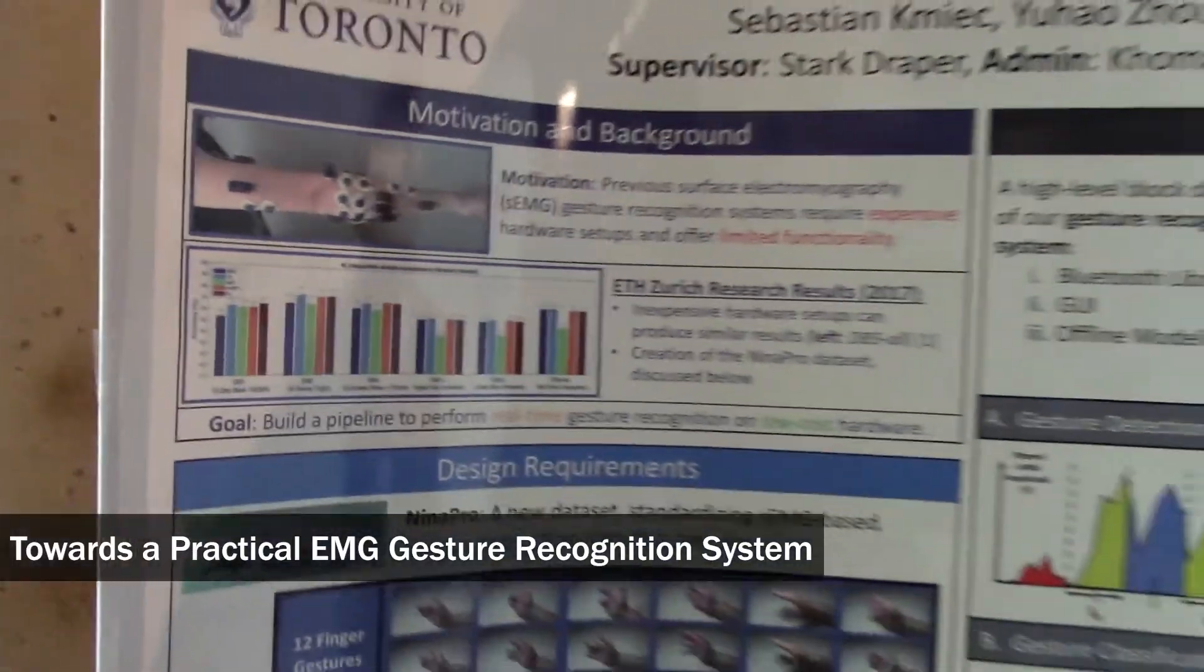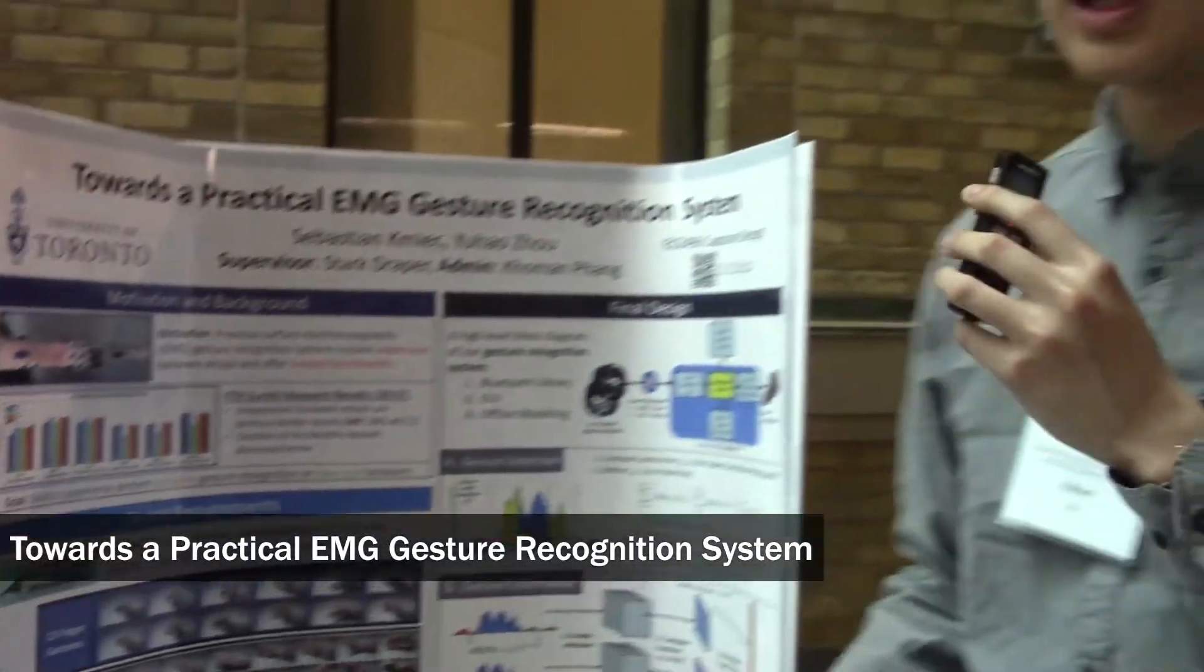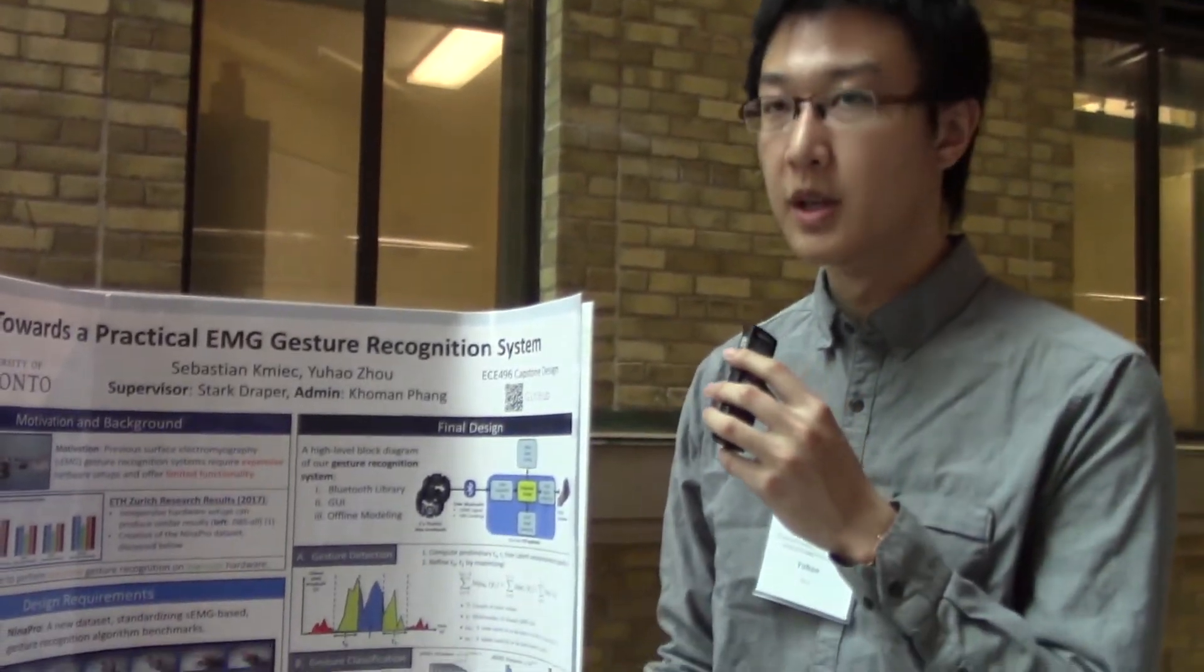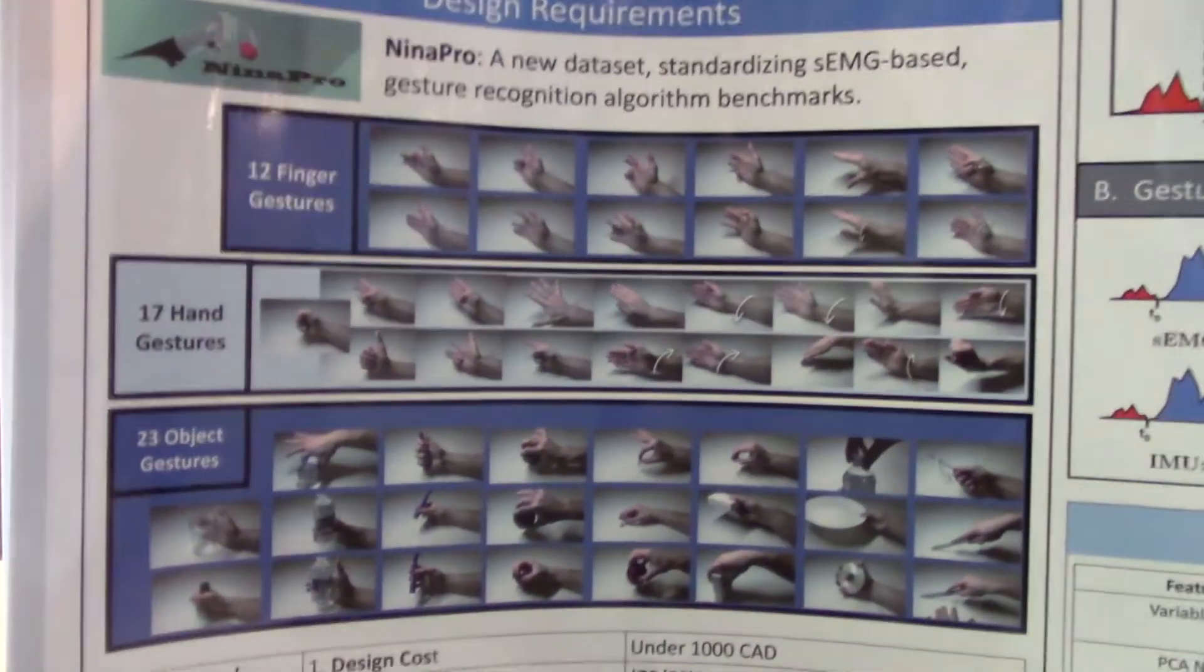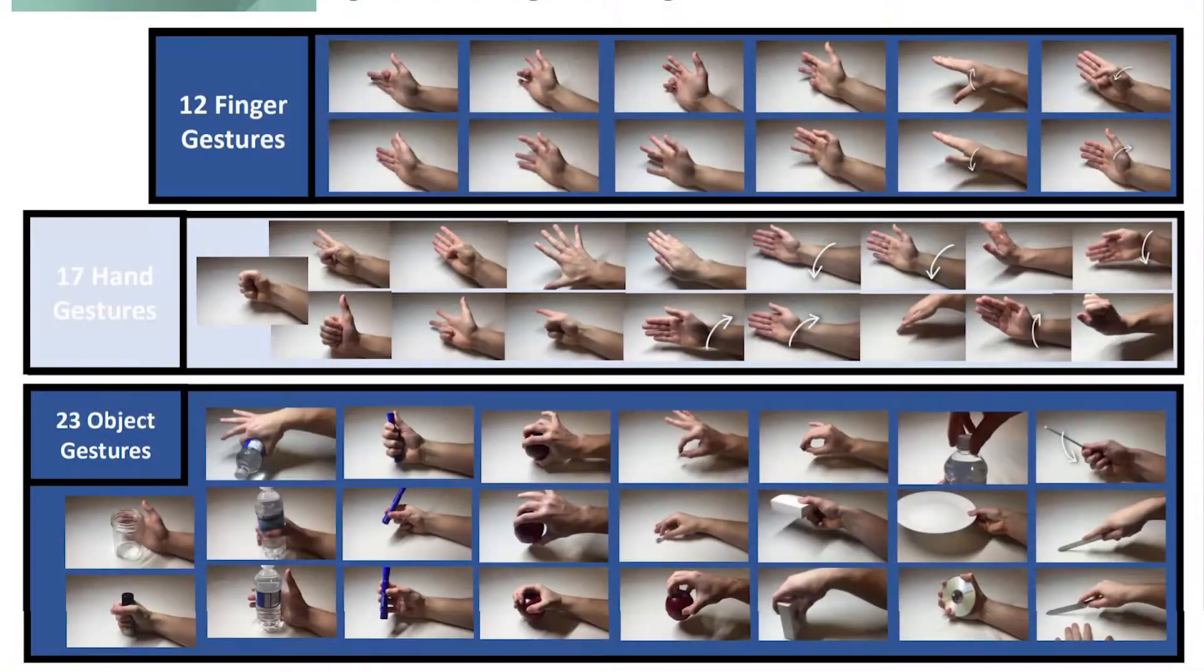Now it brings us to our goal which is to build a real-time gesture recognition system that works on low cost hardware. When it comes to the classes of gestures we are interested in, a total of 52 classes.